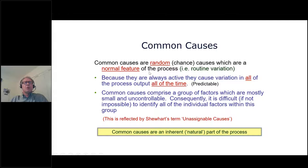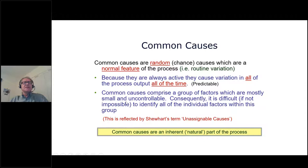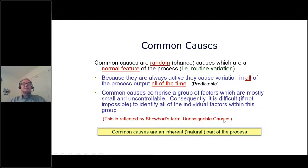Common causes are random — Shewhart referred to them as chance causes, a normal feature of a process, always present, causing variation in all process output all the time. While not ideal, common cause variation is at least predictable once understood, because it's stable and always there. Common causes comprise a group of factors which are mostly small and uncontrollable — possibly a very large group — making it difficult or often impossible to identify all individual factors. This is reflected by Shewhart's term 'unassignable causes' — he felt it would not be worthwhile to try to individually identify and tackle them.